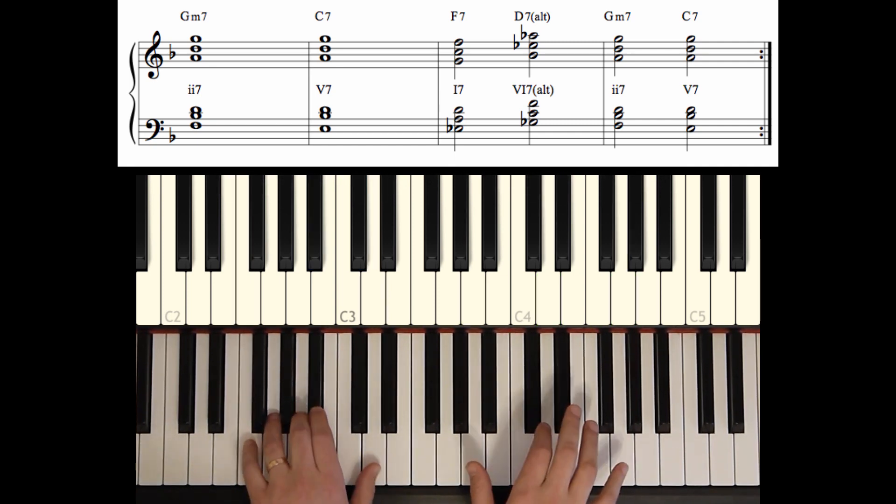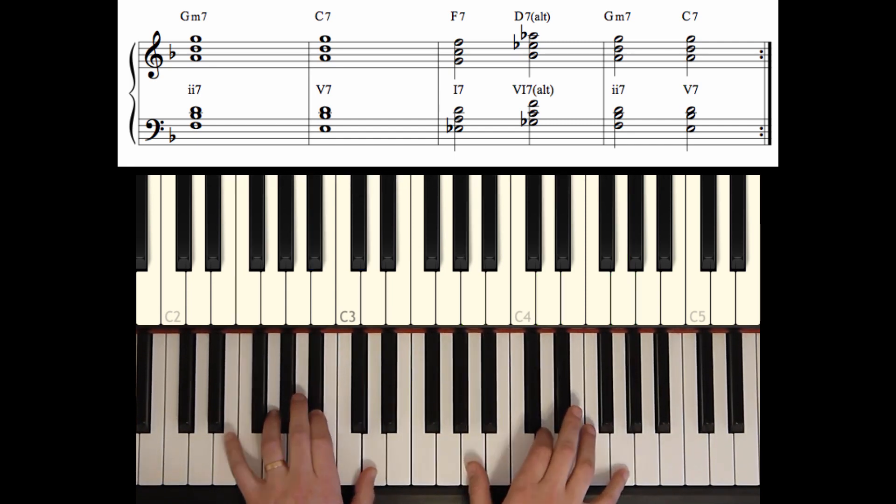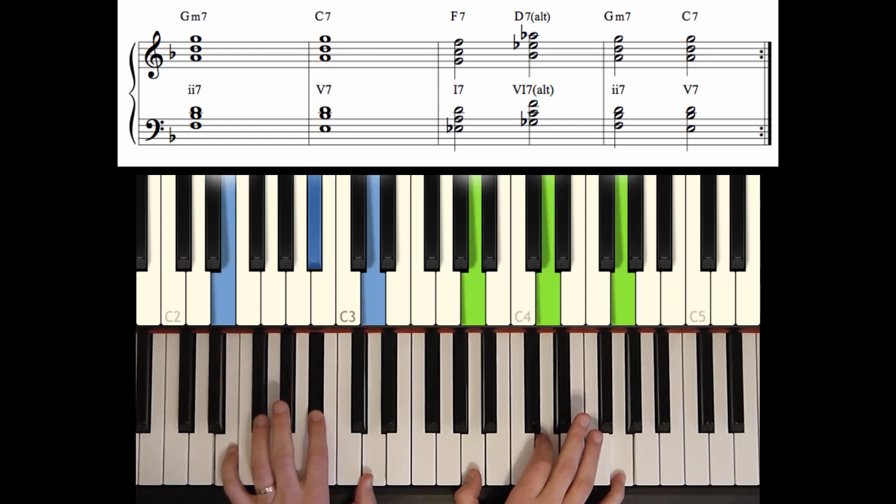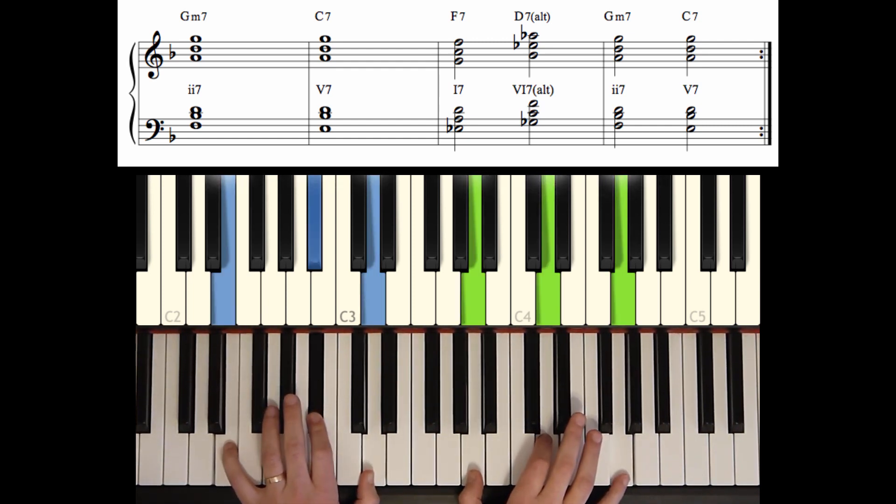To get from our G minor 7 to the chord that's in measure 10, C7, we're just moving one note. F to E. So now let's think of these notes in terms of a C7. We have a 3rd, 7, 9, 13, 9, and 5th.